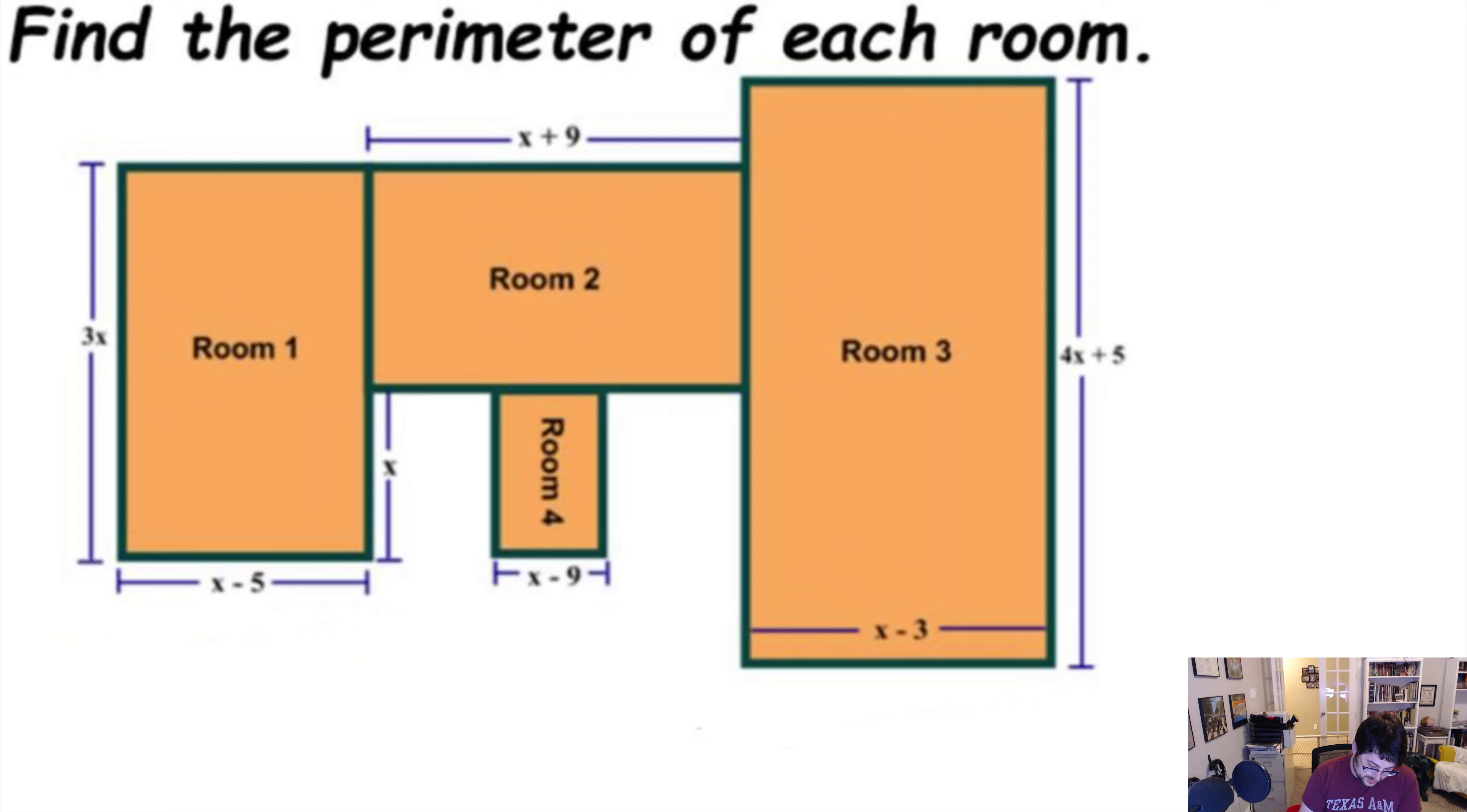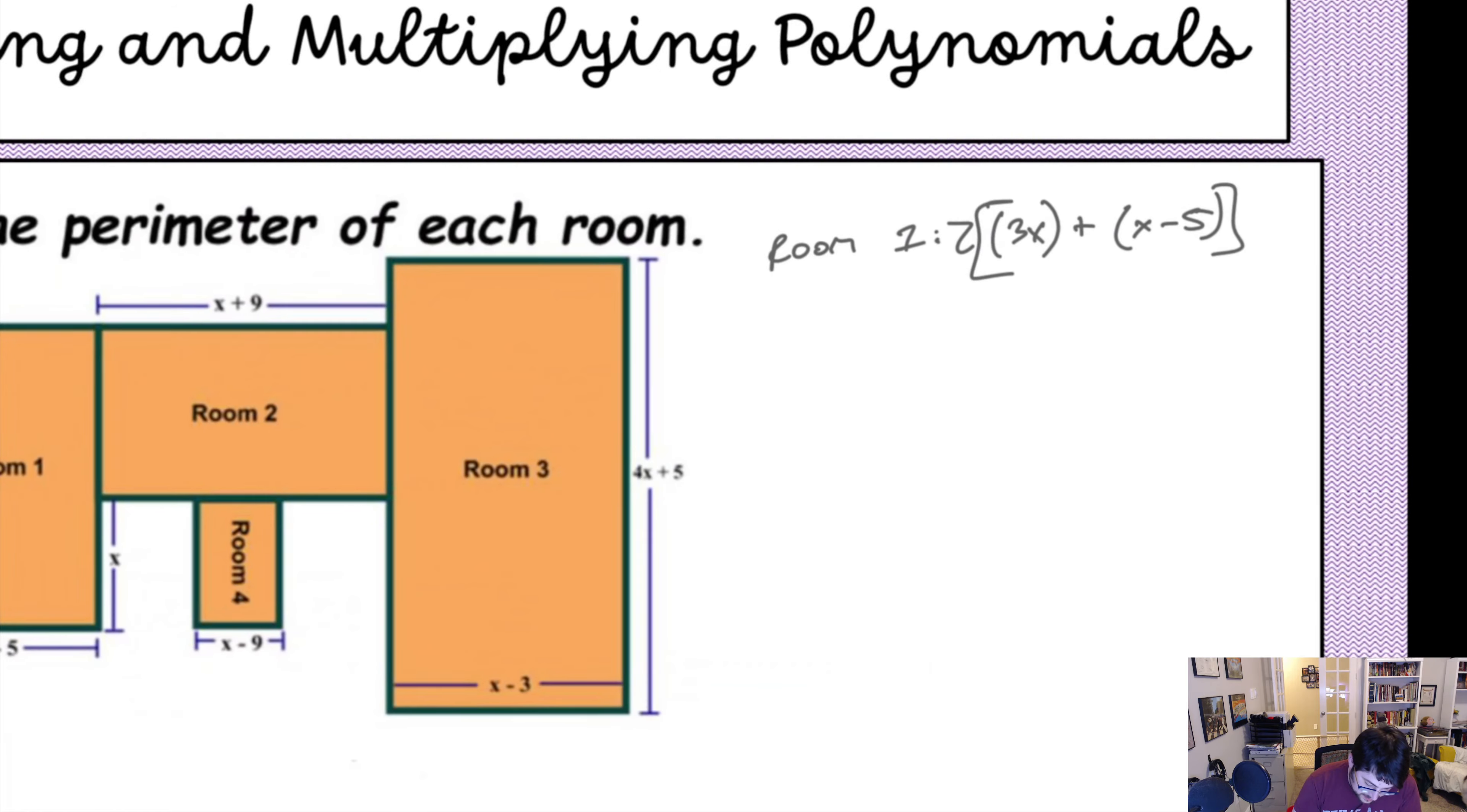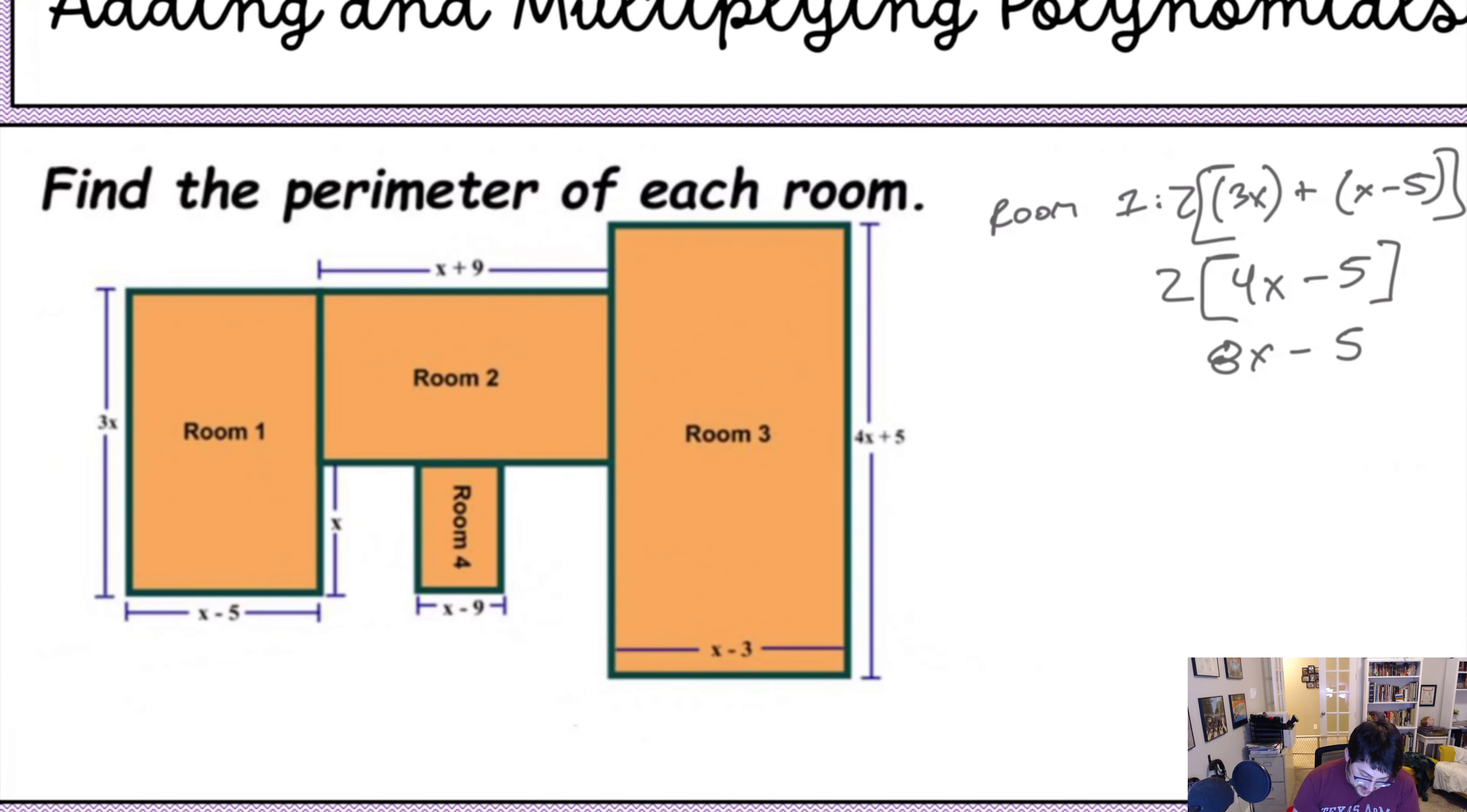Find the perimeter of each room. Okay. This is actually not too bad. So, let's start with room 1. Because, Sophie, Sophie, because we have room 1. Room 1 has a side of 3x and has another side of x minus 5. 3x, x minus 5. So, we can just add those up and multiply them by 2. If we do that, we would have 4x minus 5 times 2. That gives us 8x minus 10. That's our perimeter of room 1.